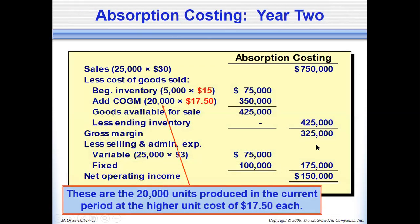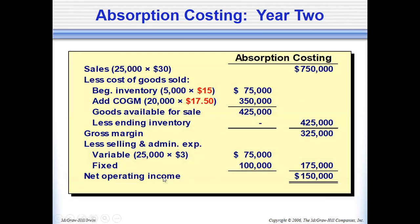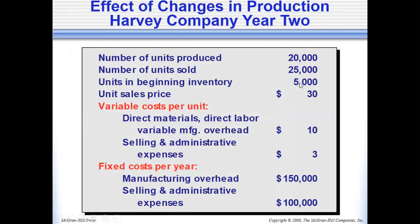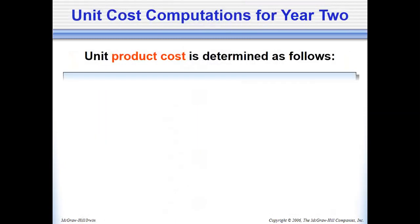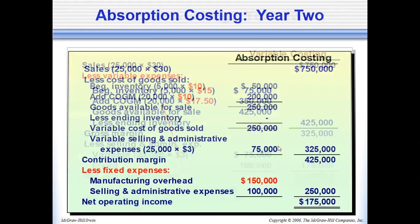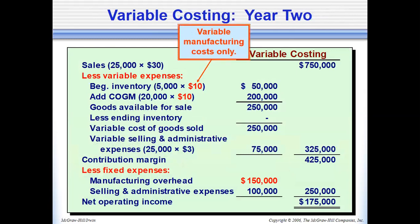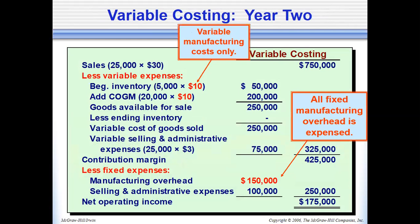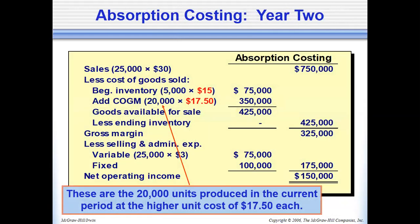For absorption costing in year two, the fixed overhead is $150,000 and units produced is 20,000. Beginning inventory is 5,000 plus 20,000 produced minus 25,000 sold, giving zero ending inventory. However, they still differ because of the difference between production and sales — we compare production versus sales. Under absorption costing the income is $150,000, while under variable costing it's $175,000, because sales is higher than production by 5,000 units. Therefore, variable costing income is higher by $25,000.